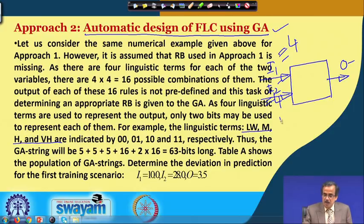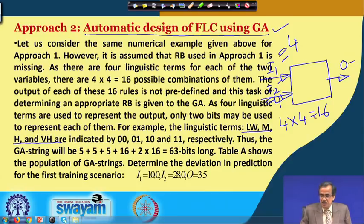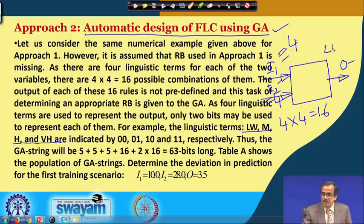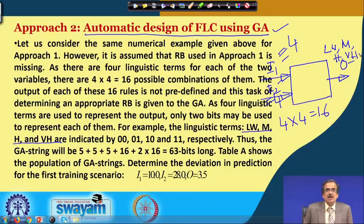The four linguistic terms are low, medium, high, and very high. We have four linguistic terms for i1 and four for i2, giving 4 × 4 = 16 rules — that is 16 possible combinations for the input parameters. We are also going to use four linguistic terms — low, medium, high, and very high — to represent the output. Let us see how to implement this approach, that is automatic design of FLC using a genetic algorithm.